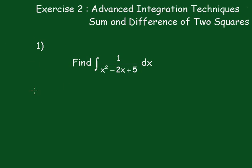Okay, now here's the solution. The integral is equal to 1 over, now we have to complete the square, so that'll be x squared minus 2x, now this would be plus 1, now this would be plus 4 to make it the same as this one, dx.